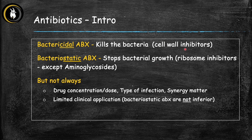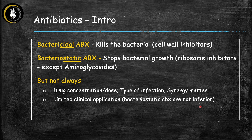A good example of bacteriostatic antibiotics is most ribosome inhibitors, except for the aminoglycosides. This is not always cut and dry — the same drug at different concentrations or doses, and depending on the infection type and synergy with other antibiotics, can be either bacteriostatic or bactericidal. As a general rule of thumb: most cell wall inhibitors are bactericidal, most ribosome inhibitors are bacteriostatic, and the rest are a mixed bag we'll go through with each drug class.